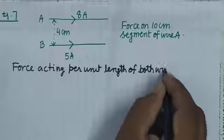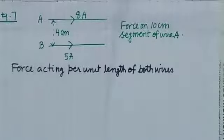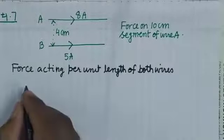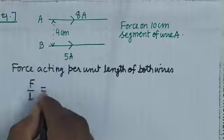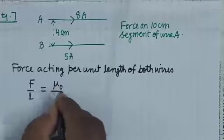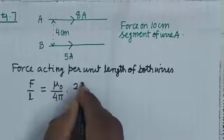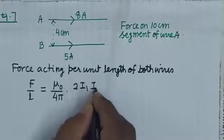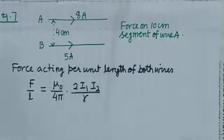You can see here they are carrying current in the same direction, straight wires, which means they are parallel. So what is the formula for force acting per unit length? F upon L equals mu_0 upon 4 pi times 2 i1 times i2 upon r.